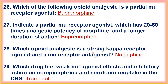Twenty-seventh, which opioid analgesic is a strong kappa receptor agonist and mu receptor antagonist? That is nalbuphine. Twenty-eighth, which drug has weak mu receptor effect and inhibitory action on norepinephrine and serotonin reuptake in the CNS? That is tramadol. When norepinephrine and serotonin reuptake is inhibited, the level of these two neurotransmitters increases in the synaptic cleft, causing increased norepinephrine which may raise blood pressure, and this effect also causes an antidepressant effect.